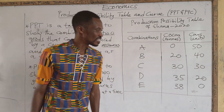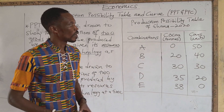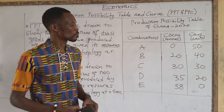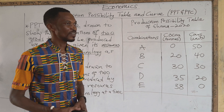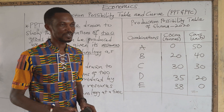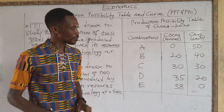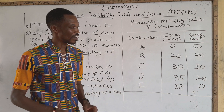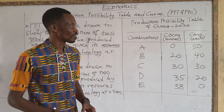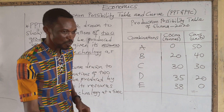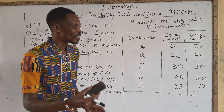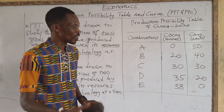Let me ask you this question: when the country chooses combination C, what would be the quantities of cocoa and cars? Your answer should be 35 tons of cocoa and 20 units of cars. Don't be tempted to just say 35 and 20 and leave it like that, because 35 and 20 could be anything — 35 cars, 35 machines, 35 shoes. So anytime you give an answer, make sure you include the units. Your answer should be 35 tons of cocoa and 20 units of cars — it can be 20 Benz cars, it can be 20 BMW cars.